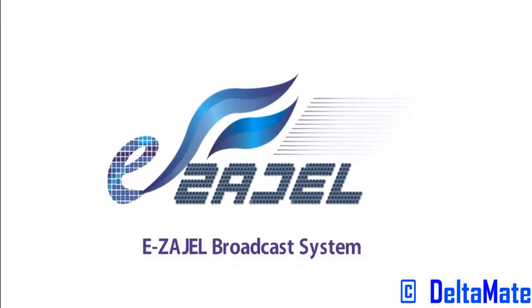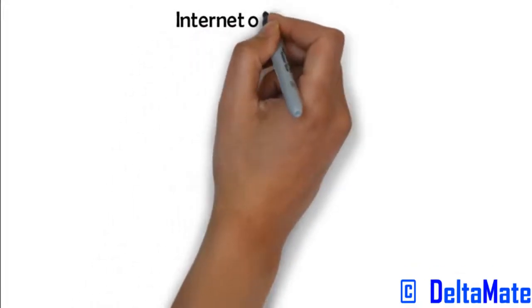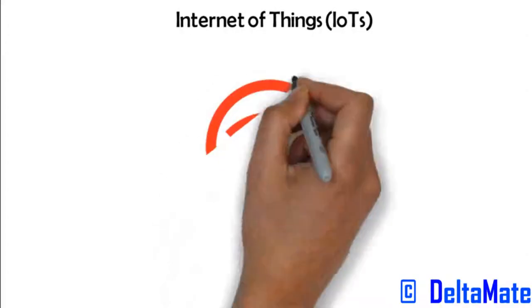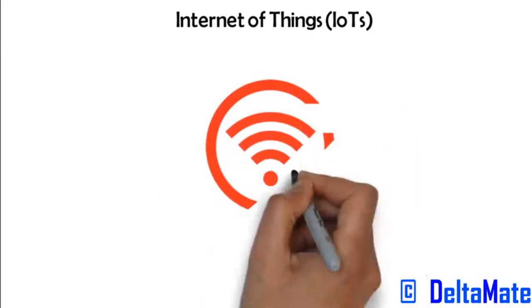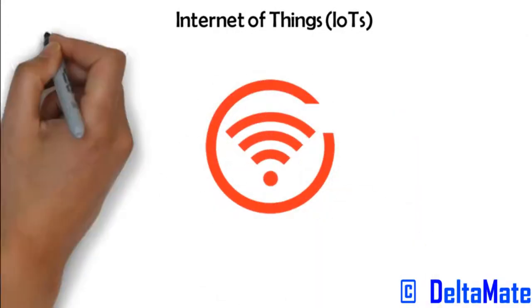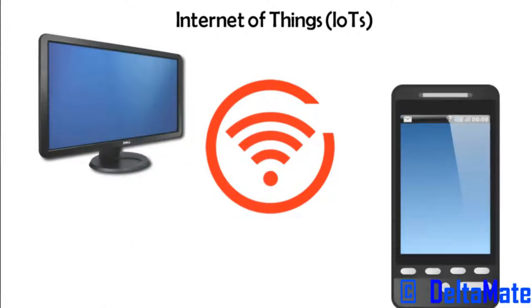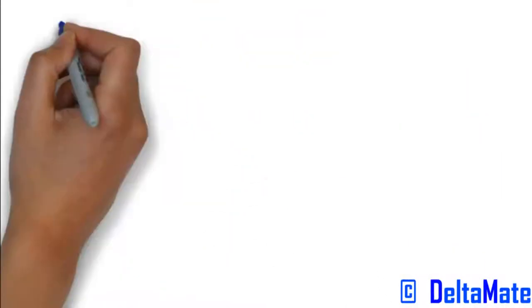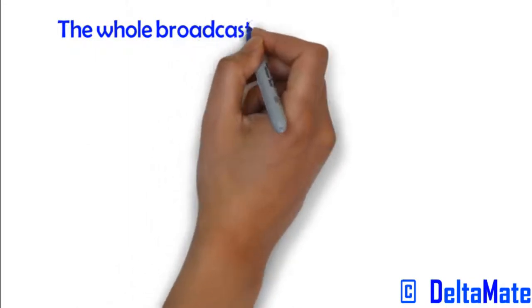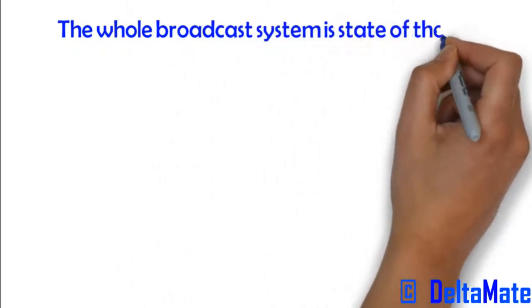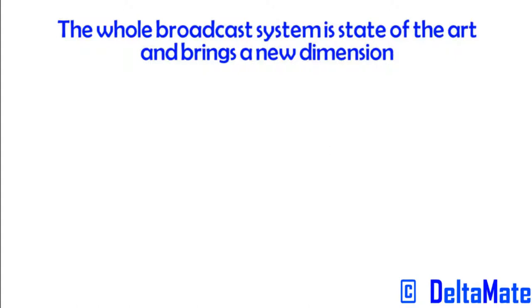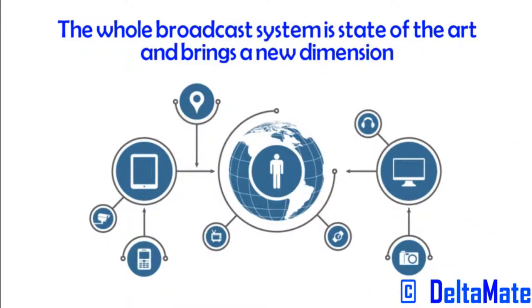Isagel Broadcast System. The product is an Internet of Things solution to provide a scalable, instant broadcast system which connects wirelessly to devices such as TVs, mobile phones, and tablets. The whole broadcast system is state-of-the-art and brings a new dimension into interactive broadcasting using the latest Internet technologies.